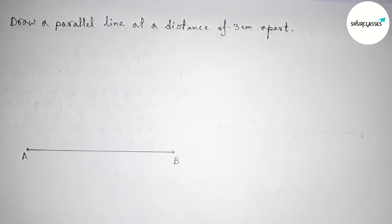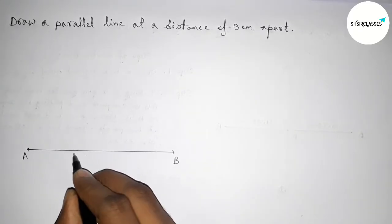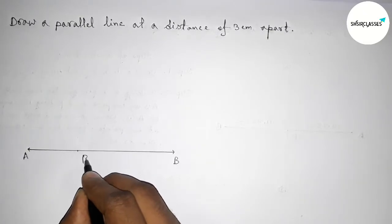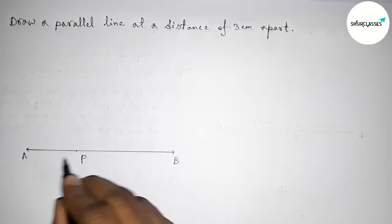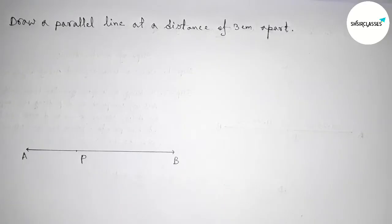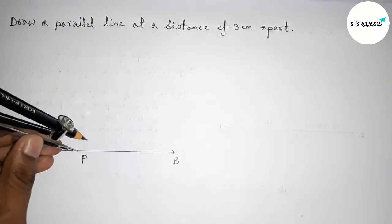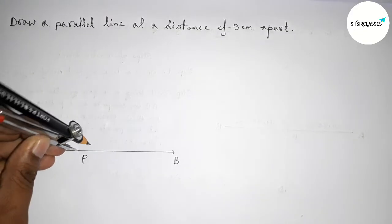Label the endpoints A and B. Next, we have to take any point on the line AB, so taking here point P. You can choose this point anywhere on the line AB, as your choice. Next, we have to draw a 90-degree angle on the point P.